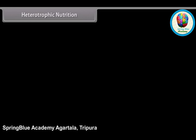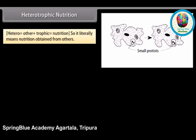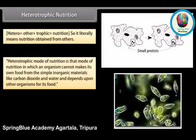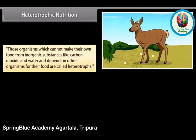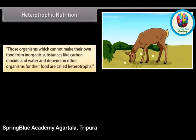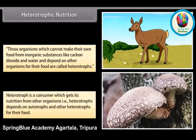Heterotrophic nutrition literally means nutrition obtained from others. A heterotrophic mode of nutrition is that mode in which an organism cannot make its own food from simple inorganic materials like carbon dioxide and water, and depends upon other organisms for its food. Most bacteria, fungi, and all animals have a heterotrophic mode of nutrition. A heterotroph is a consumer which gets its nutrition from other organisms, depending on autotrophs and other heterotrophs for food.